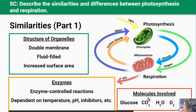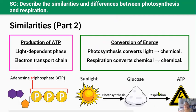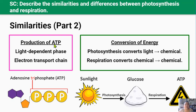Similarity three — the molecules involved: photosynthesis and respiration are opposite reactions to one another, so both reactions involve the same molecules — glucose, carbon dioxide, water, oxygen, and ATP. Similarity four — both produce ATP: during photosynthesis a small amount of ATP is produced during the light-dependent phase, whereas during respiration the majority of ATP is produced during the electron transport chain, with some also produced in glycolysis. Similarity five — conversion of energy: both processes convert one form of energy to another. Photosynthesis converts light energy into chemical energy stored as glucose, whereas respiration converts chemical energy stored in glucose into a form of chemical energy that cells can use.